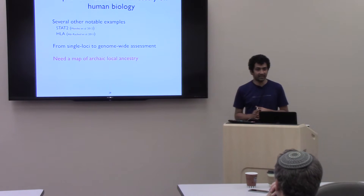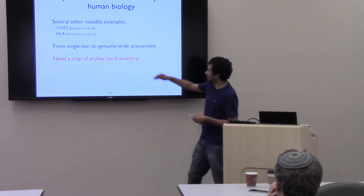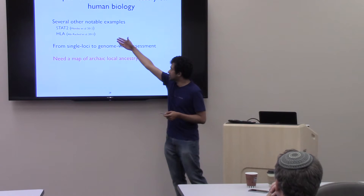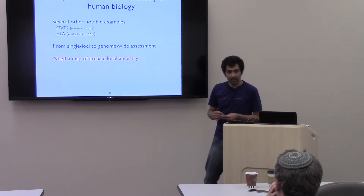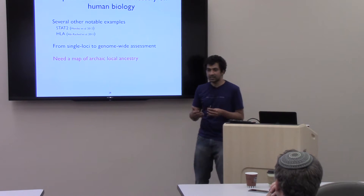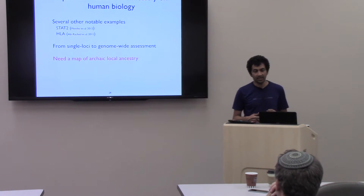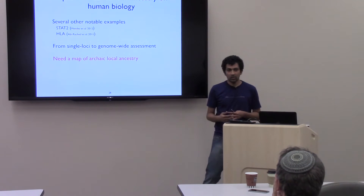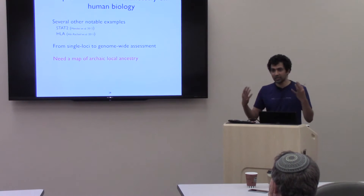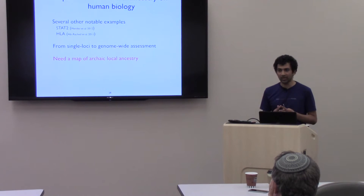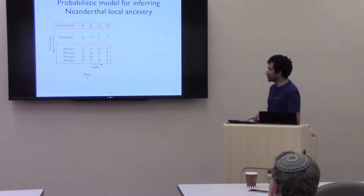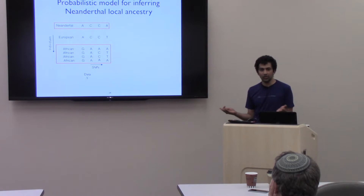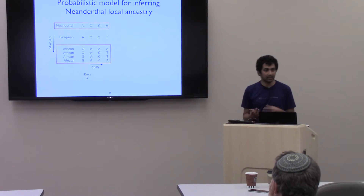There have been several notable examples from other groups as well: people have looked at immune-related genes like STAT2 and the HLA locus, finding substantial contribution of Neanderthal ancestry. We'd like to go from these single-locus examples to a more systematic genome-wide assessment — looking at the distribution across the whole genome and using that to understand the functional consequences. To do this, we first need to identify segments of the genome that have Neanderthal ancestry using a statistical model for inferring Neanderthal local ancestry.